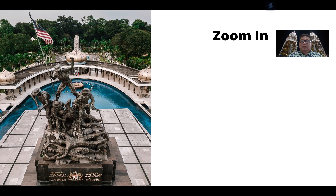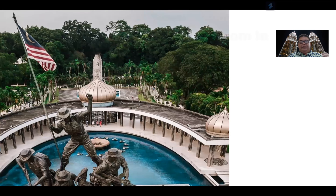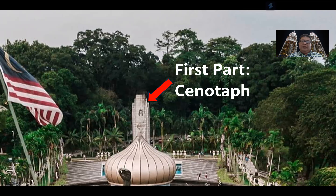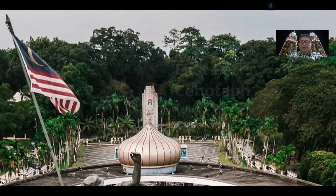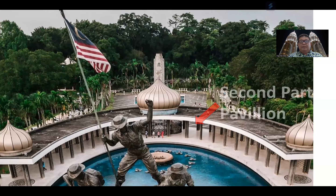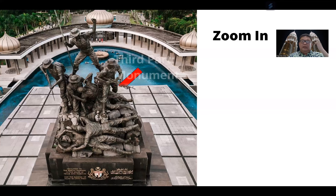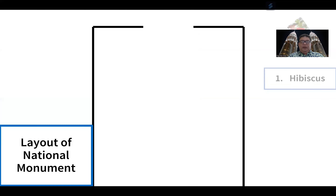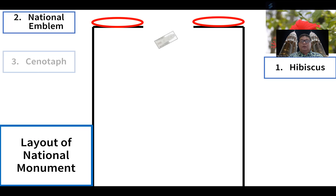The zoom in method requires imagination — as if you have arrived at the place and slowly walk inside. Zooming in at the National Monument, it is divided into three parts: the first part is the cenotaph, the second part is the pavilion, and the third part is the monument itself. These three parts are the topics you can speak on.